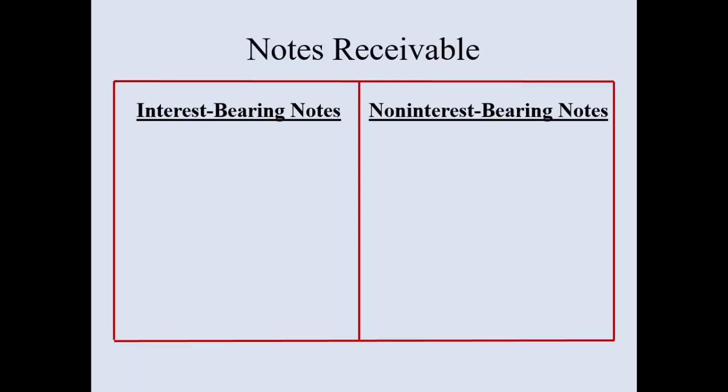You will hear the terms interest-bearing and non-interest bearing. Just know that interest always exists. Non-interest bearing notes is just often a sales gimmick — a way to get you to make a purchase that you're told does not contain interest, but for accounting purposes interest always exists.